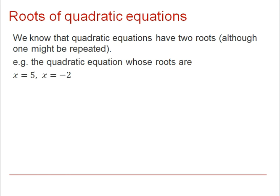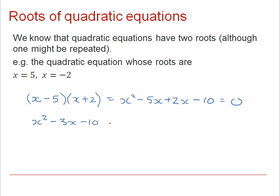If we look at the quadratic equation whose roots are x equals 5 and x equals minus 2, then we know that there are factors x minus 5 and x plus 2. If we expand this out, we would find we had x squared minus 5x plus 2x minus 10 equals 0.